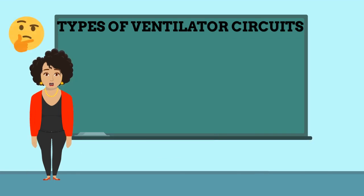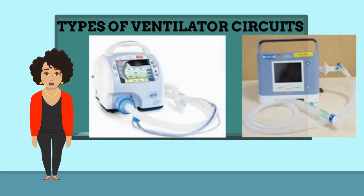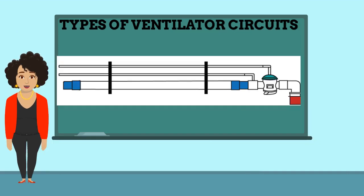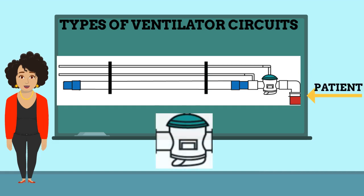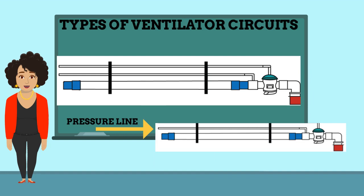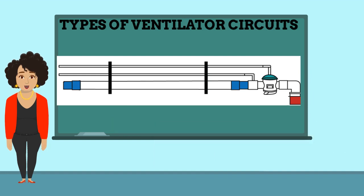You're probably wondering what an active or passive circuit is — don't worry, I have the answer. Typically, an active exhalation valve near the patient is used with portable ventilators. During inspiration, the exhalation valve is closed via the pressure line from the ventilator, and the expired air is directed out of the exhalation valve.